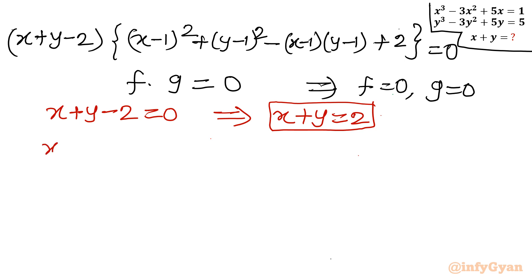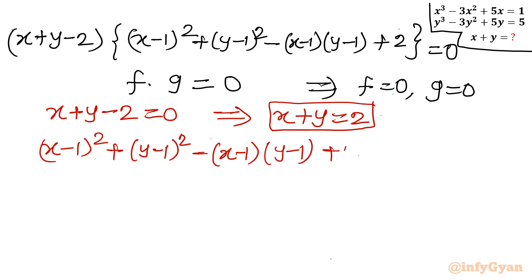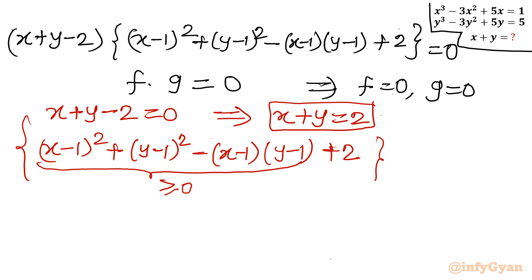Now for the bracket: (x-1)² + (y-1)² - (x-1)(y-1) + 2. Using the AM-GM inequality, we can conclude this expression is always positive, so positive plus 2 is obviously greater than 0 — the bracket cannot equal zero. Also, x = 1 and y = 1 are not solutions of the original equations: substituting gives 1 - 3 + 5 = 3 ≠ 1 and 3 ≠ 5. So the only valid solution is x + y = 2.